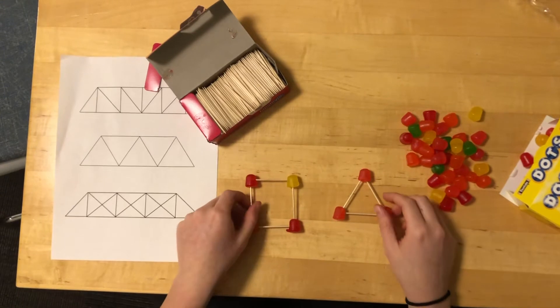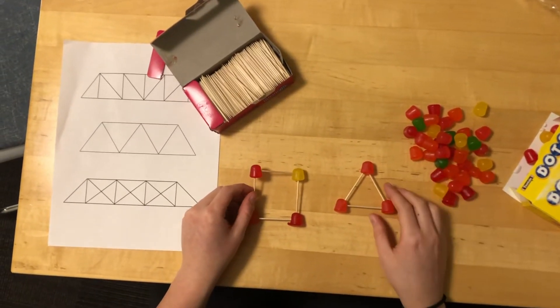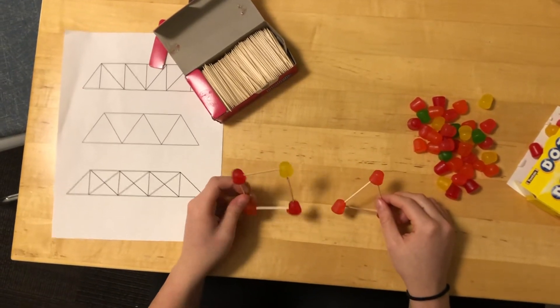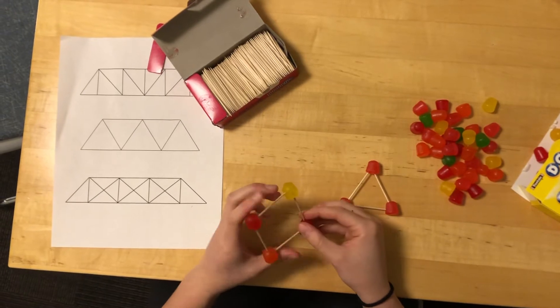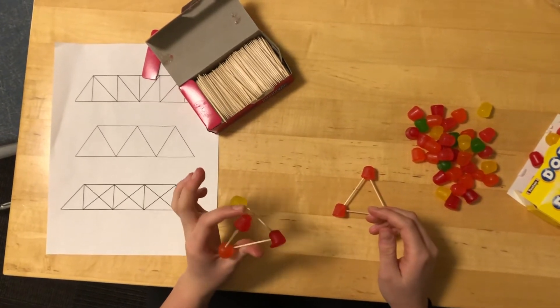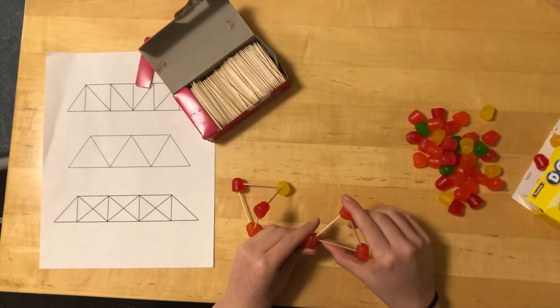So first we would ask the kids, who were most of the time elementary schoolers, what shape they thought was the strongest. And from there we would show them these two, a square and a triangle, and then we would demonstrate why the triangle is so much stronger by pressing on the top and showing that the square will move, but the triangle when you press on it holds its form.